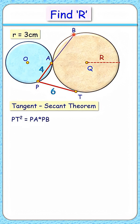Putting the values we get 6 square is 4 times PB. PB length is 36 by 4 or 9 centimeter. As PB length is 9, so AB length that will be 5 centimeter.